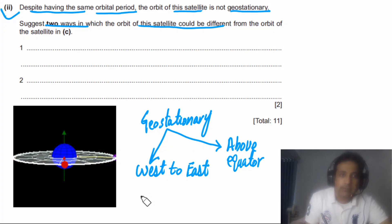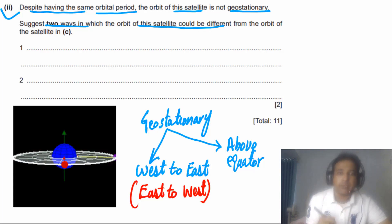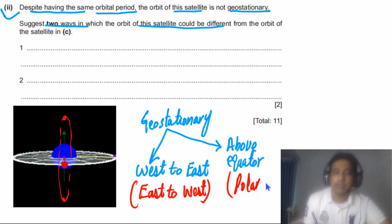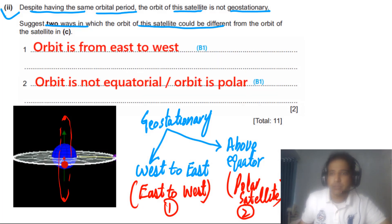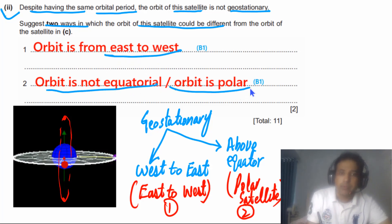So the two differences could be: first, the satellite orbits from east to west rather than west to east, so it would not appear stationary to an observer on the surface; second, it is not above the equator — perhaps it is in a polar orbit. In your answer you can mention either of these two points to gain full marks.